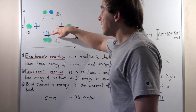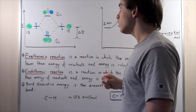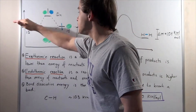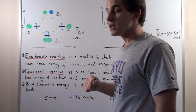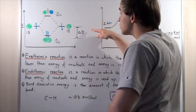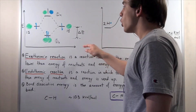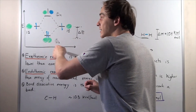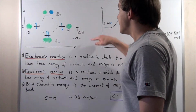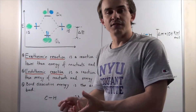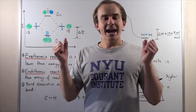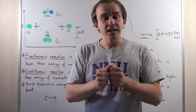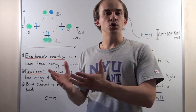Electrons will be found in the bonding molecular orbital. Because these two atomic orbitals are higher in energy than this molecular orbital, energy will be lost. There's a change in energy that occurs when these two atomic orbitals form this molecular orbital — this energy is released into the environment. In other words, when two H atoms form a bond, energy is released. Any time we form bonds, energy will always be released into the environment.